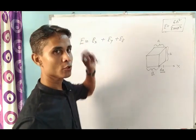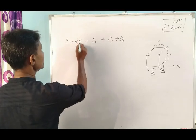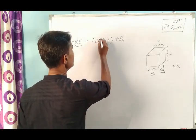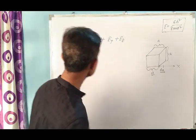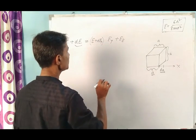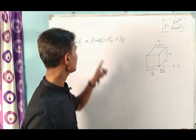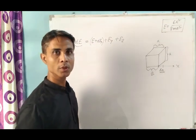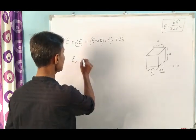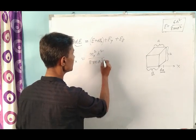So our energy equation will be changed. The energy E plus dE - this is the increase in energy along the x-axis - so I will write dEx. Energy E plus dEx will change due to distortion. The energy along the x-axis is equal to Nx² h² divided by 8mA².